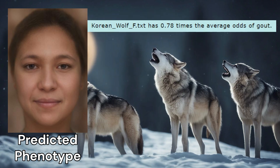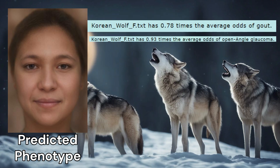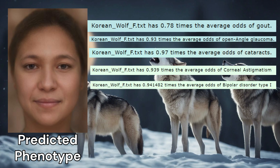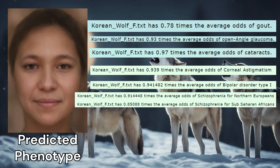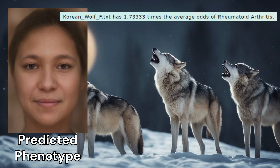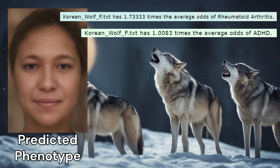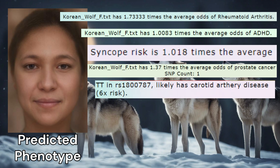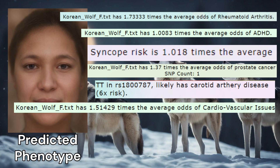She had lower than average odds for gout, open-angle glaucoma, cataracts, corneal astigmatism, bipolar disorder, and schizophrenia. She had higher than average odds for rheumatoid arthritis, ADHD, syncope, and prostate cancer, and carried the genotype leading to significant risk of carotid artery disease in humans, which contributed to her high score for cardiovascular issues risk.